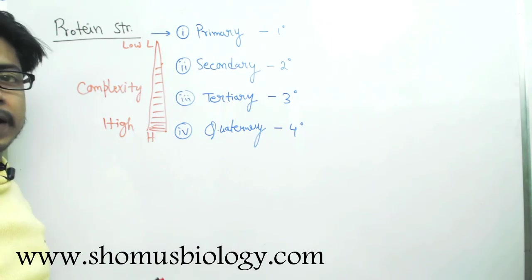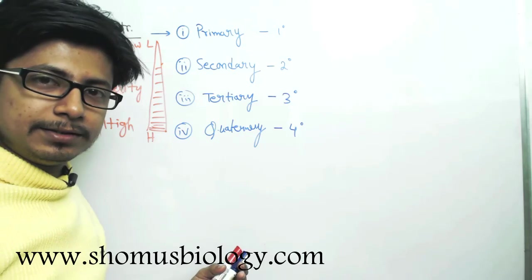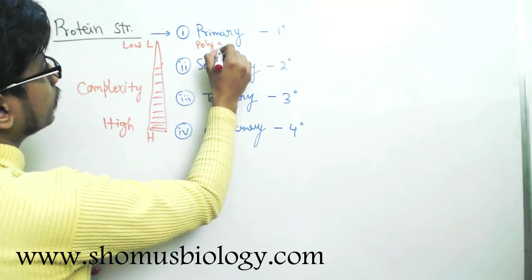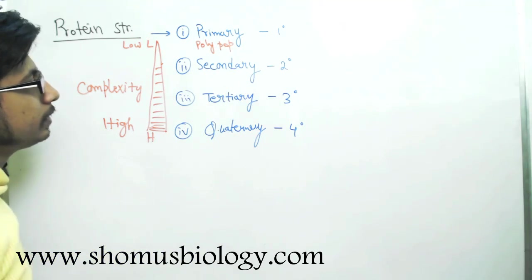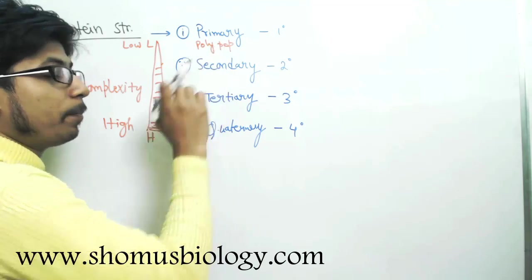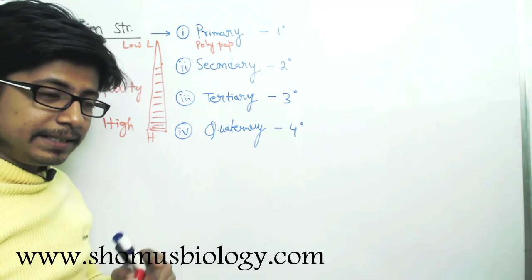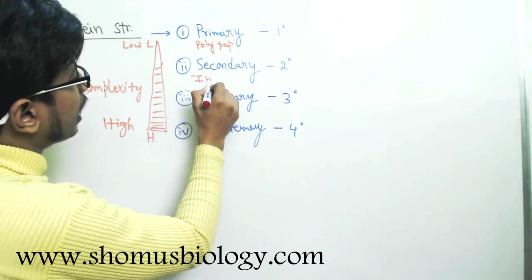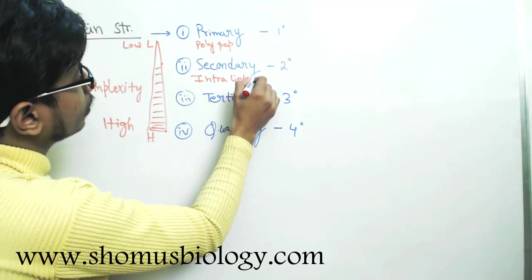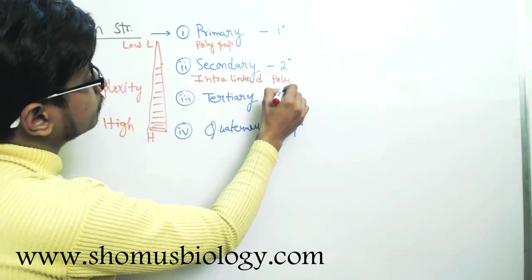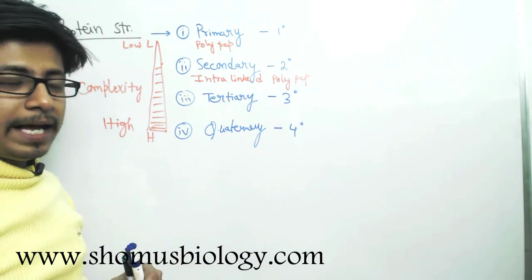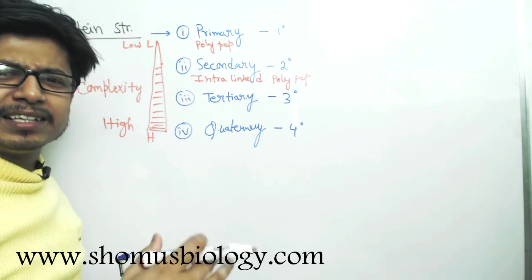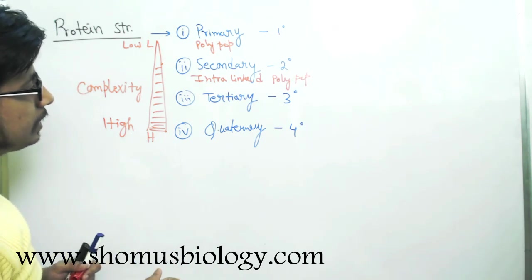That is the amino acids linked with each other, a simple polypeptide chain. The secondary structure is that polypeptide chain but they have internal hydrogen bonds, so it's kind of an intra-linked polypeptide chain. The example for it is alpha helix, beta sheet, and other types of coils and turns.